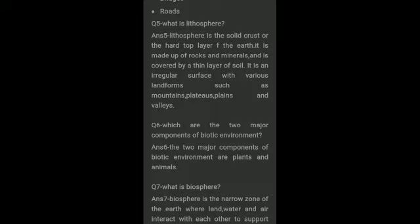What is lithosphere? Lithosphere is the solid crust or hard top layer of the earth. It is made up of rocks and minerals and is covered by a thin layer of soil. It is an irregular surface with various landforms such as mountains, plateaus, plains, and valleys.